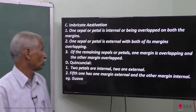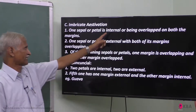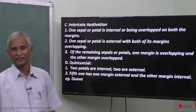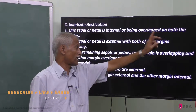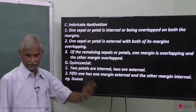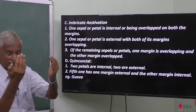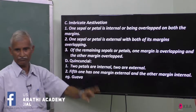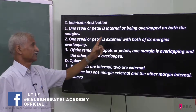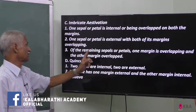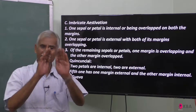In Imbricate aestivation, one sepal or petal is completely internal, overlapped on both its margins. One is fully internal — that is called Imbricate. One sepal or petal is external, with both of its margins overlapping. This one is fully external.